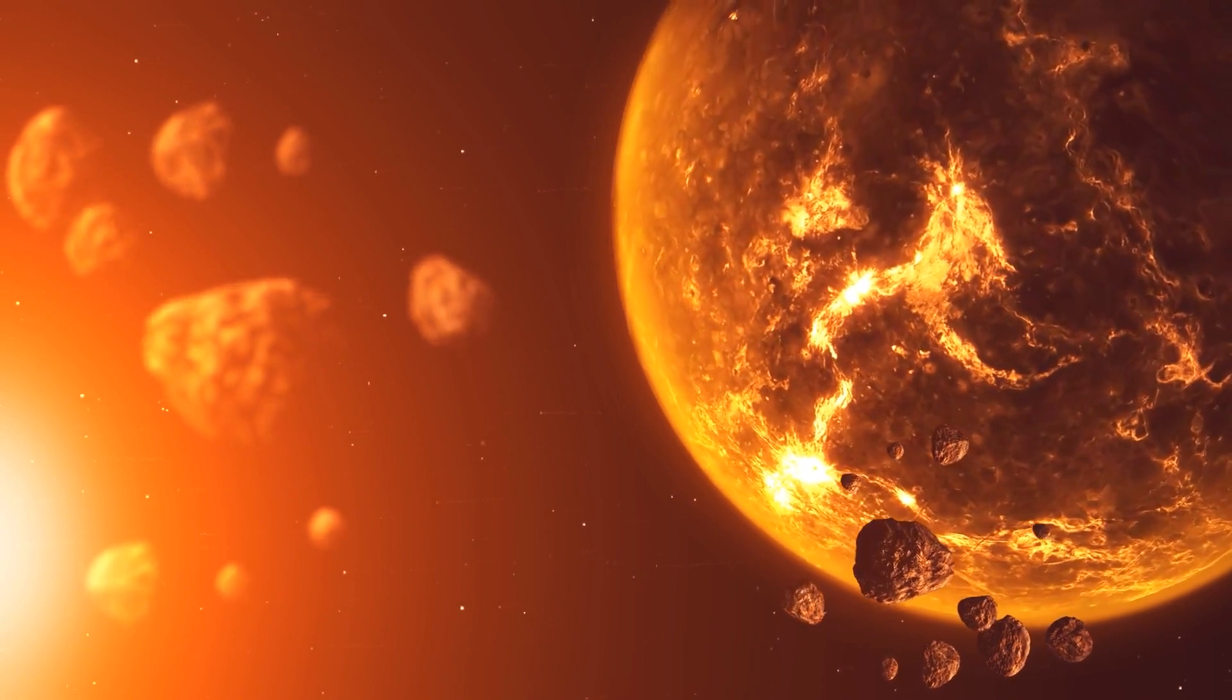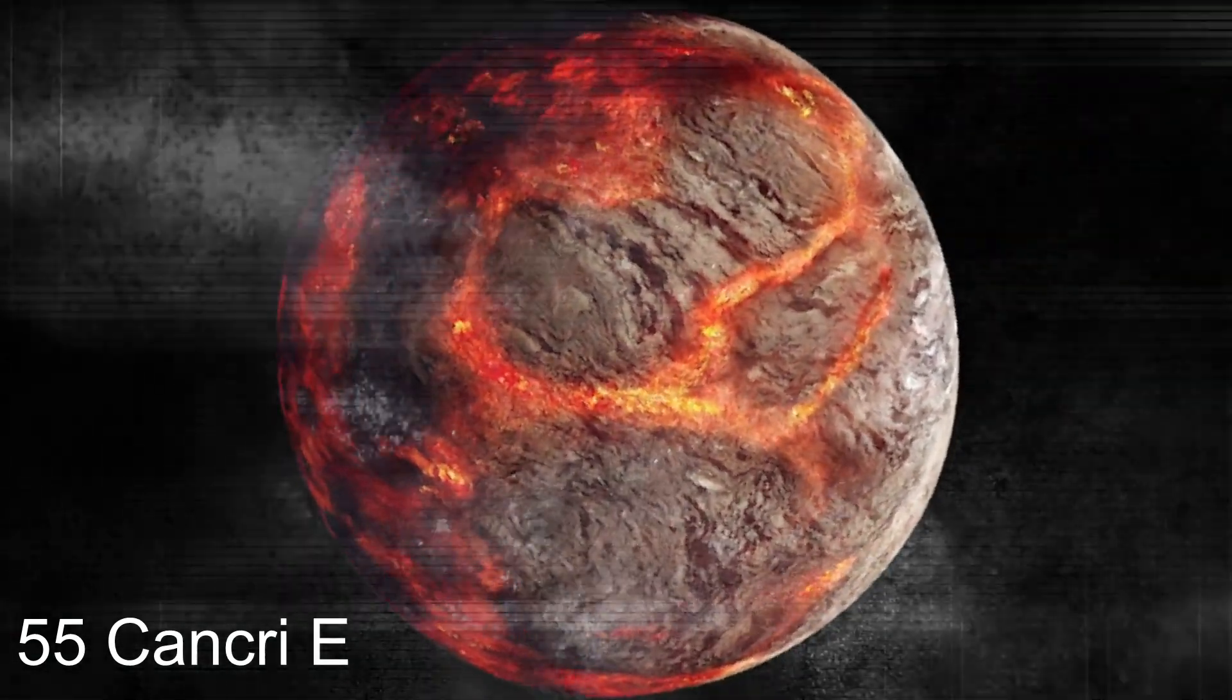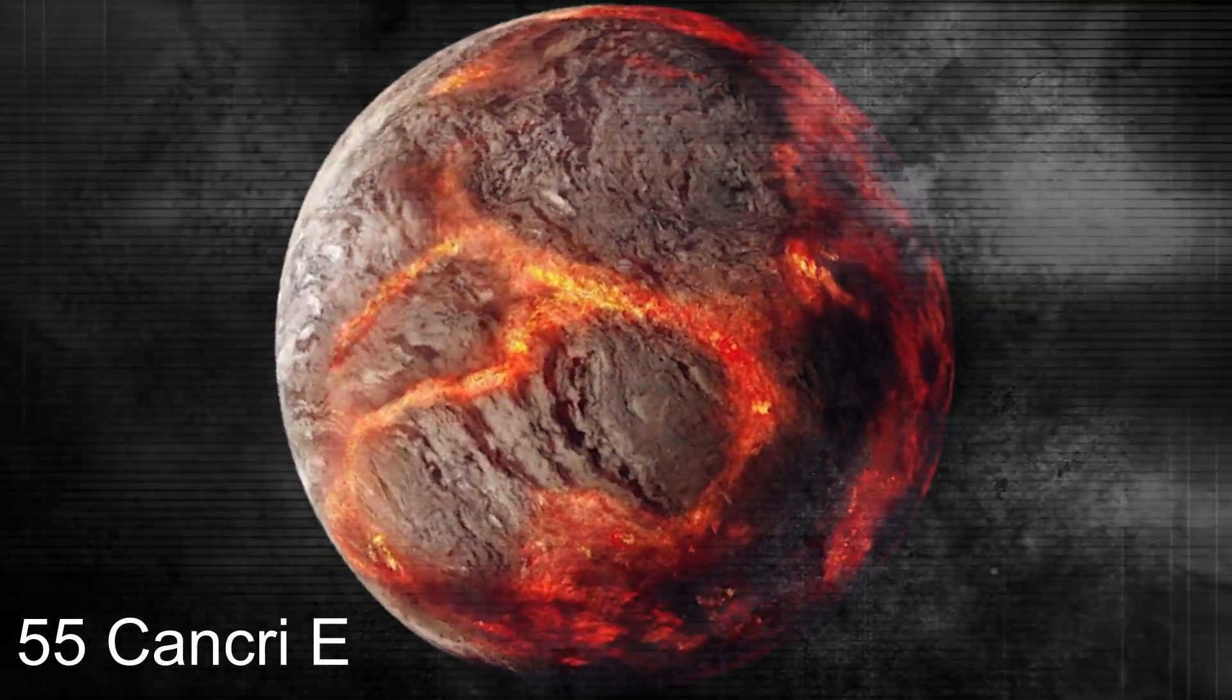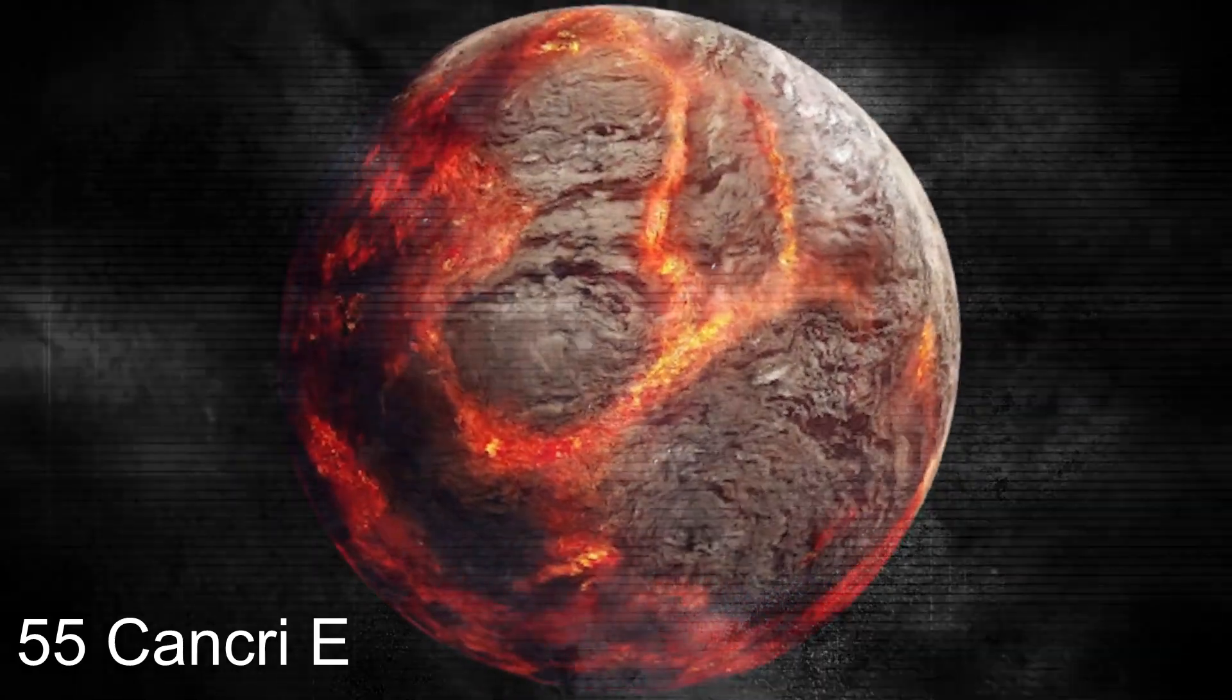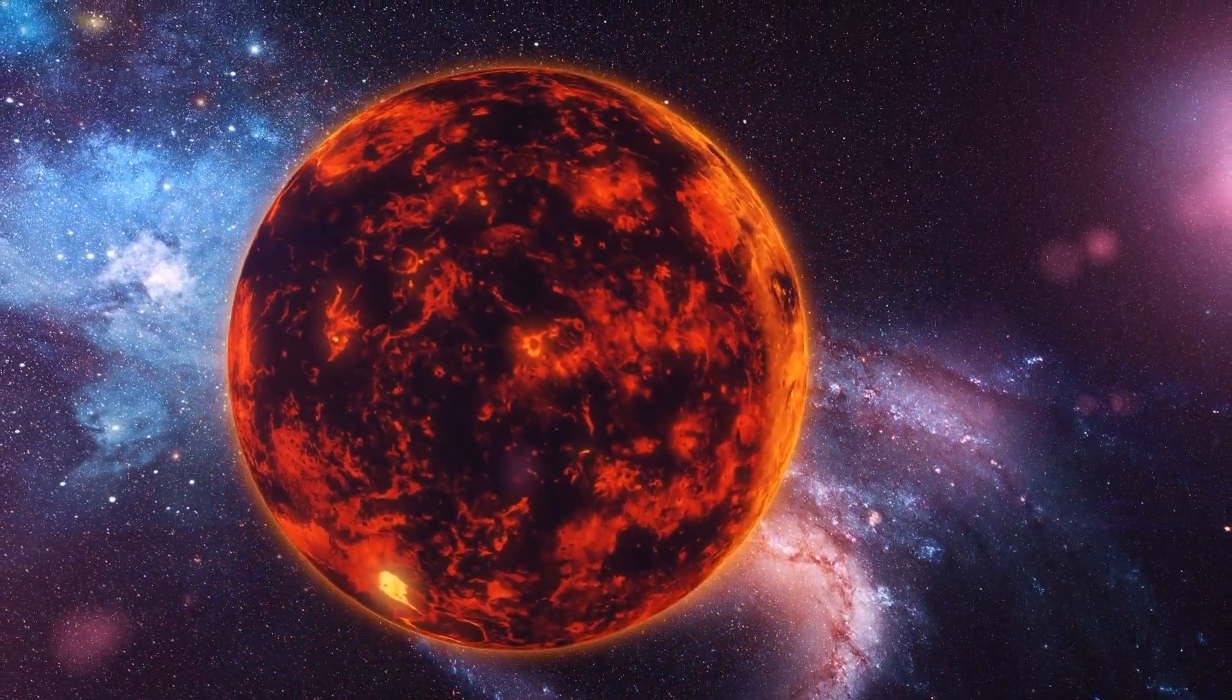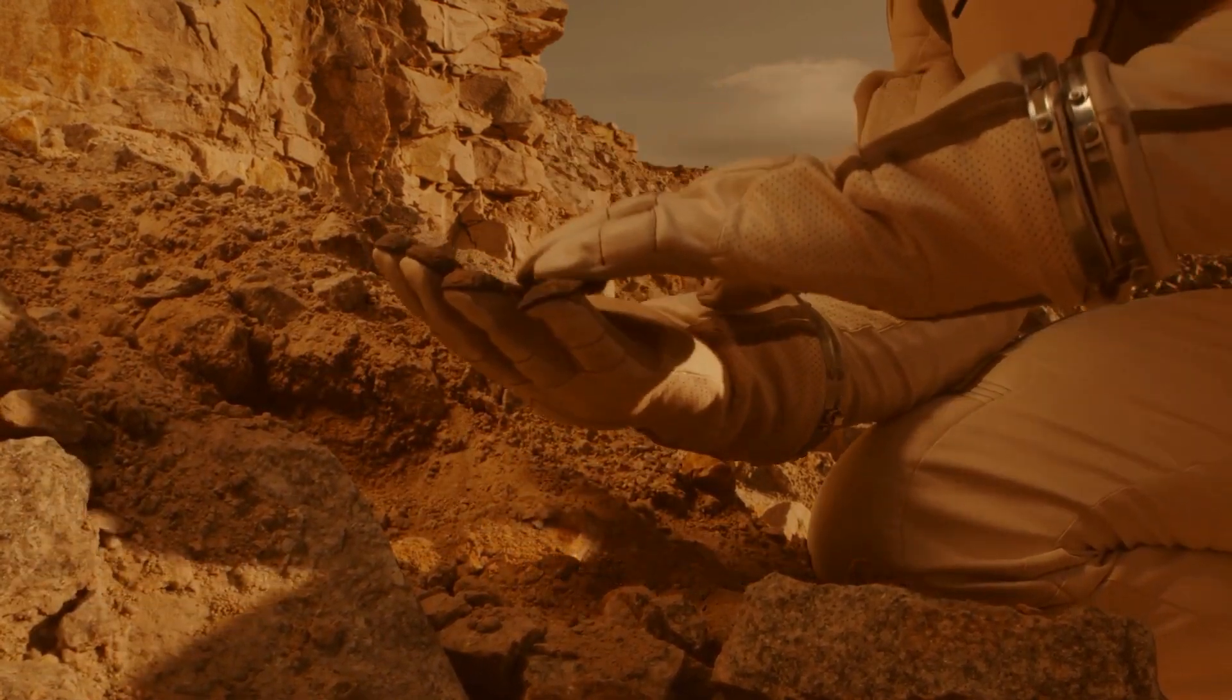55 Cancri e is yet another planet on the list of exoplanets that are close to their host stars. This planet only takes 18 hours to complete an orbit, so you can imagine how close it is to its star. It also happens to be too hot, going from temperatures of up to 4,172 degrees Fahrenheit. But what makes this planet one-of-a-kind is its composition. Formerly known as Janssen, the planet is twice the size of Earth, with about nine times the mass. It's believed that this exoplanet is composed of high-pressed carbon that is in the form of graphite and diamonds mixed with some iron and other elements.